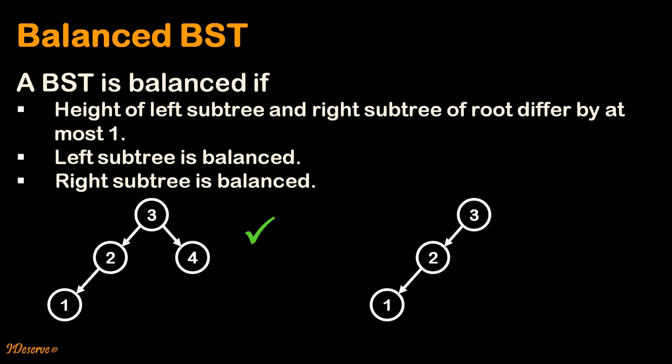Consider another BST. Here the height of the left subtree is 2 and the height of the right subtree is 0. So the difference is 2, and hence this is not a balanced BST.